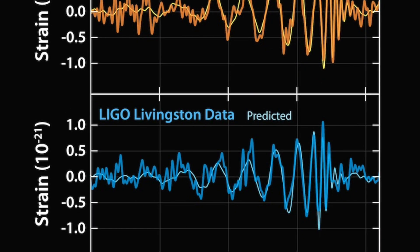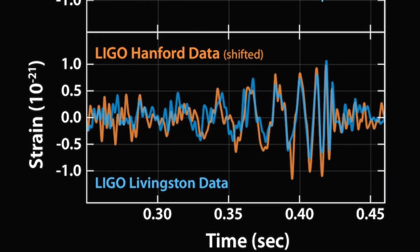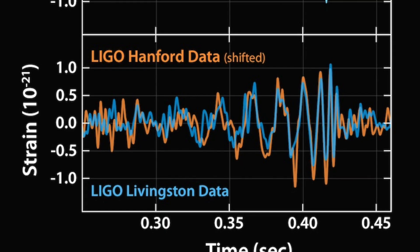But scientists found ways to cut out that noise and in addition there are two labs, one in Louisiana and one in Washington, making sure that the signal detected wasn't from something local. That moment when those two detections matched up perfectly was the goosebumps moment when scientists realized we had heard a true signal.